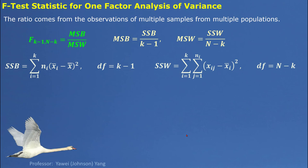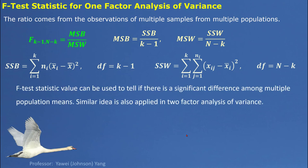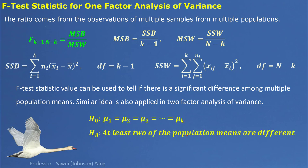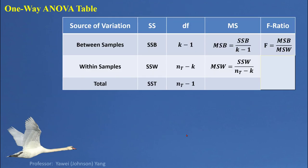From this F-test statistic value, we can tell if there is a significant difference among multiple population means. This kind of test is called one-way ANOVA or single-factor ANOVA. Here's the hypothesis model generally speaking. When F is bigger than the F critical value, we reject the null hypothesis. The corresponding degrees of freedom are related to each sum square.